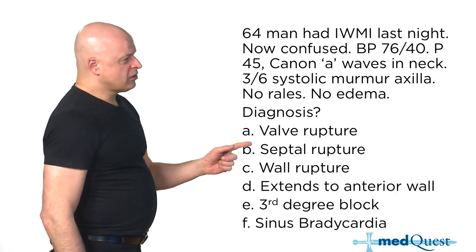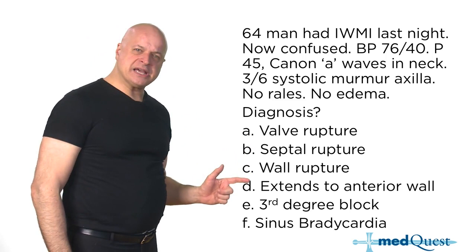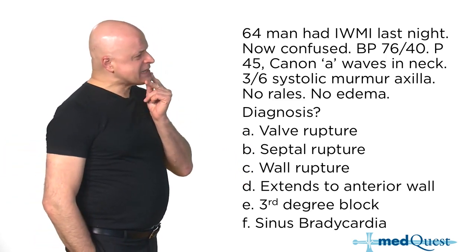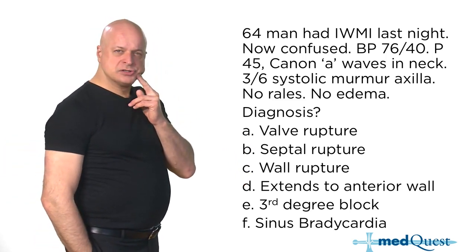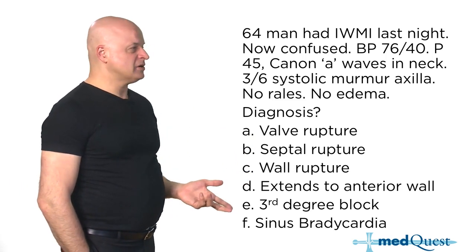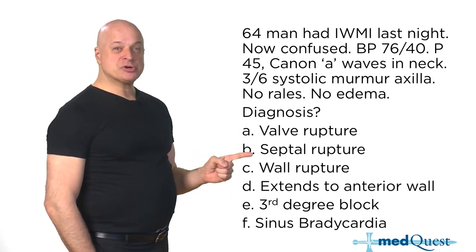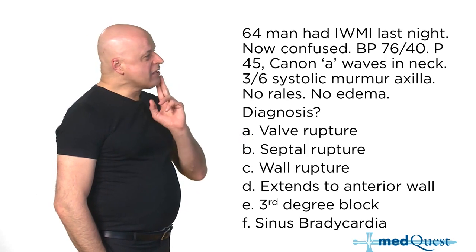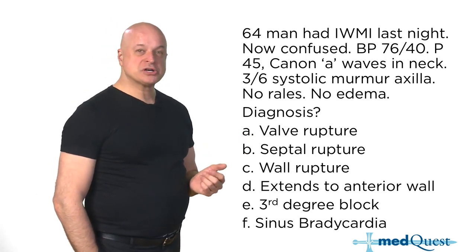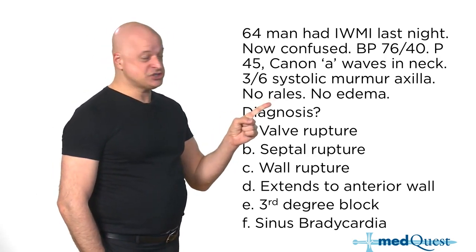All of these are complications of MI. Which of these can cause hypotension? All of them. Valve and septal rupture — well, those would give you rales, wouldn't they? They'd give you congestion.